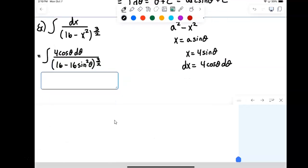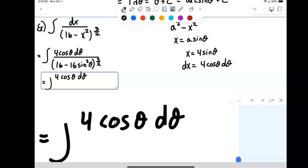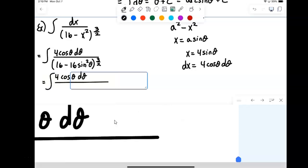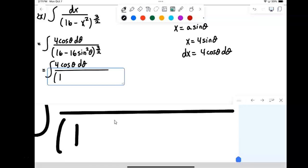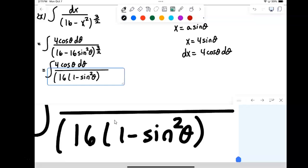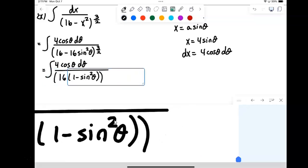We can factor the 16 out. So 4 cosine theta d theta on top. On the bottom, we're going to have 16 times 1 minus sine squared. And that's all to the 3 halves.